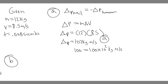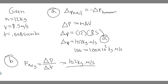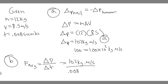Let's move on to Part B: the average force acting on the nail. You need to know that the average force is equal to the change in momentum divided by the change in time. We already solved for the change in momentum — it's 102 kilogram meters per second. We divide that by the change in time, which is the interval it comes to rest in: 0.008 seconds. So 102 divided by 0.008 gives you 12,750 newtons.